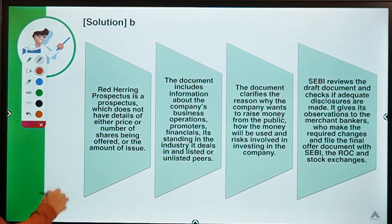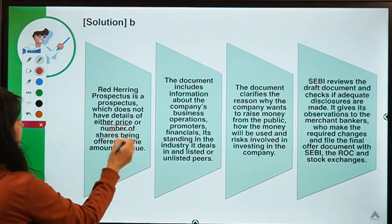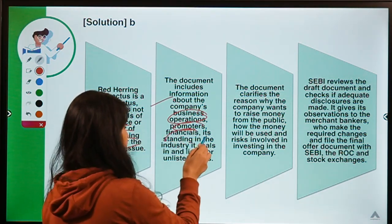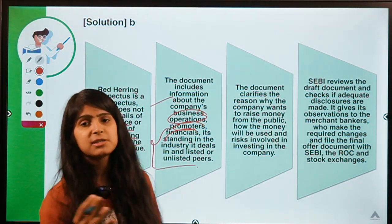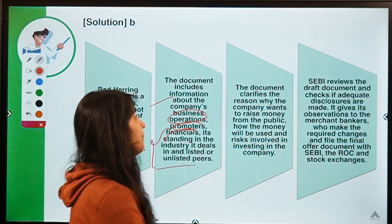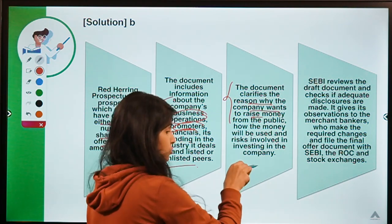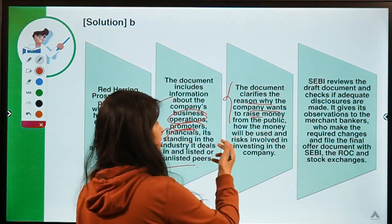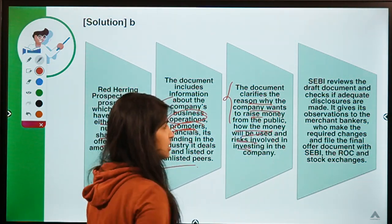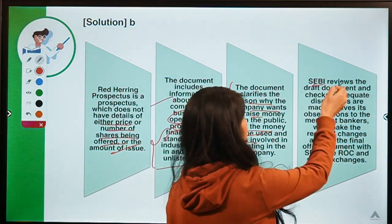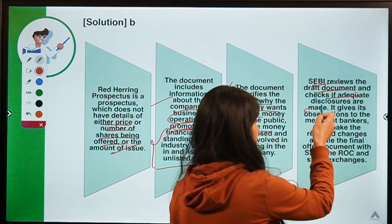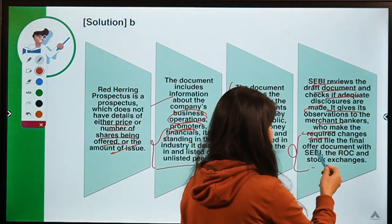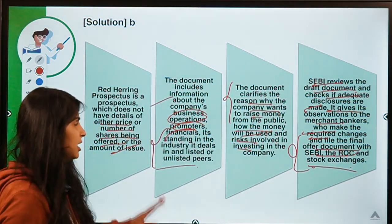A Red Herring Prospectus does not have details of either price or number of shares being offered. The document includes information about the company's business operations, promoters, and financial standing — giving investors a peek at what they are getting into. It also clarifies why the company wants to raise money, such as expansion projects or acquiring a new firm, and how the money will be used. SEBI, the Indian regulator, reviews it and gives observations to merchant bankers who make required changes.